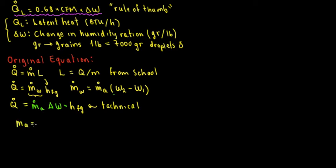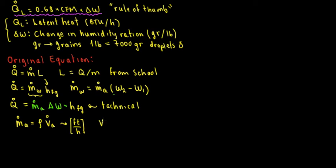Mass of air is going to be equal to density times volume of air. Since this is divided by time, this is going to be pounds per hour and cubic feet per hour. From other videos, if VA is in cubic feet per hour, then VA equals CFM times 60, because in one hour there are 60 minutes — it's just a conversion factor.